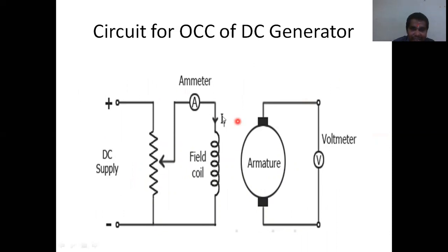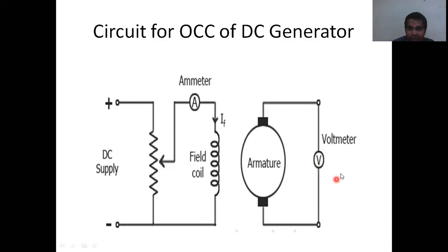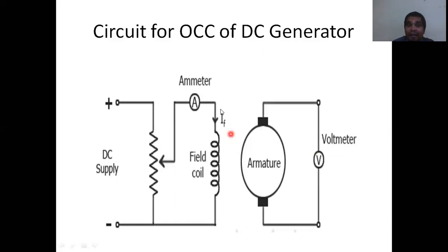Here is the diagram for open circuit characteristics. The field winding of the DC machine is energized from a separate DC source, and the field current is adjusted with the help of field resistance. The voltage across the armature is measured for the corresponding field current, keeping speed constant. You gradually increase the field current and measure the voltage until it reaches its maximum value.